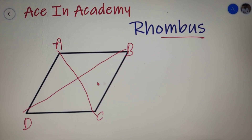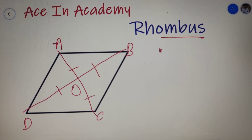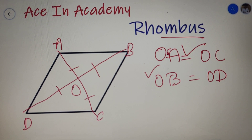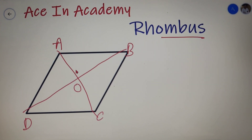The fourth property: if I name the intersection point as O, then OD is equal to OB and OA is equal to OC. Thus the diagonals of a rhombus bisect each other. Since the diagonals are not equal, OA equals OC and OB equals OD, but OA is not equal to OB and OC is not equal to OD. The diagonals bisect each other at 90 degrees, so angles AOB, BOC, COD and AOD are all equal to 90 degrees.